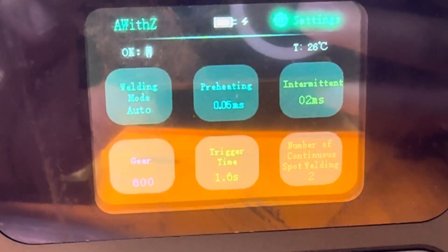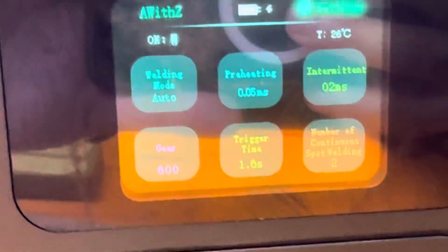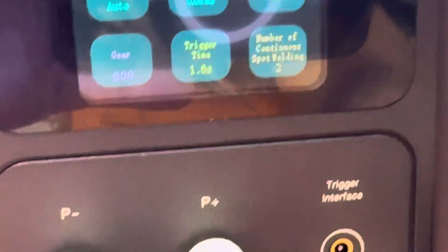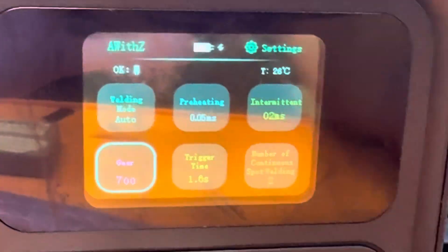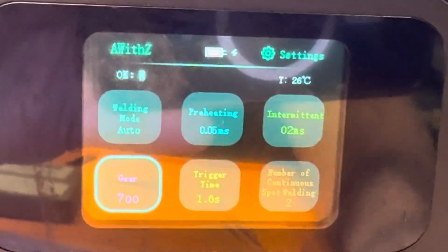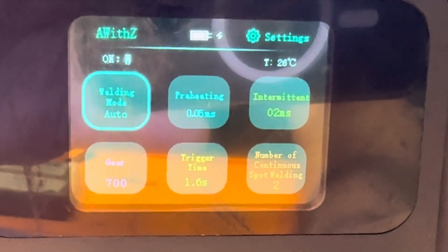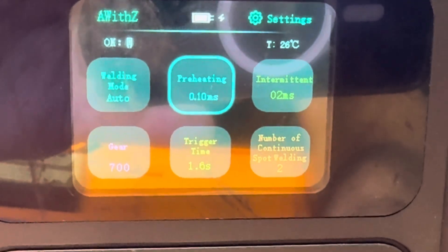We're going to be using gear 600. Maybe I'm going to increase this. Let's go and change this maybe. Just for fun. I may use 700, let's use 700 gear with a preheat of 0.5. Let's change that as well to 0.10. The rest looks fine.